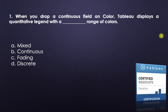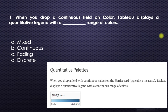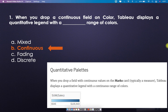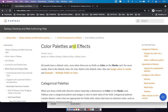Fading and 'always' cannot be answers either. 'Discrete' and 'continuous' are the two possible answers. If you drop a continuous field, the legend for color will look like a continuous legend. From the Tableau website on quantitative palettes: when you drop a field with continuous values on the marks card — typically a measure — Tableau displays a quantitative legend with a continuous range of colors. So 'continuous' is the answer.